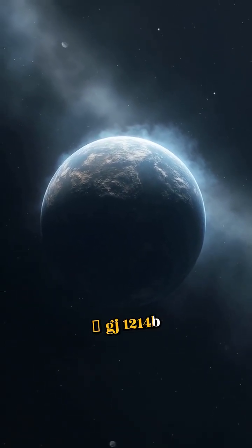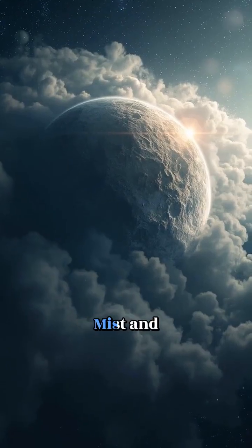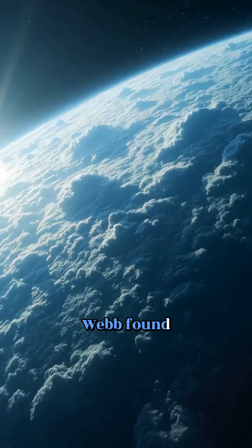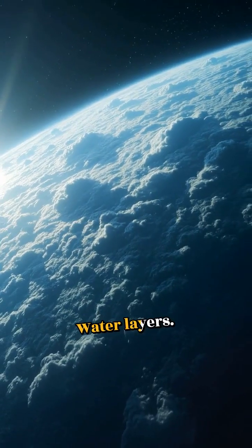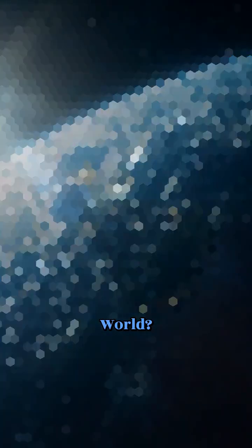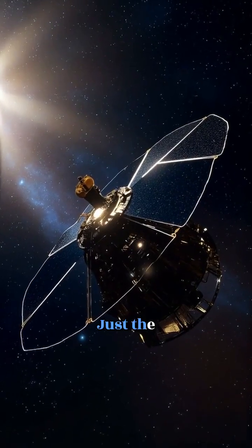GJ-1200.4tb, a super-Earth shrouded in mist and vapor. Webb found thick clouds and possible water layers. Could it be an ocean world? And this is just the beginning.